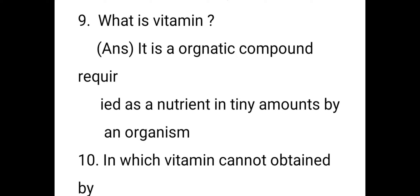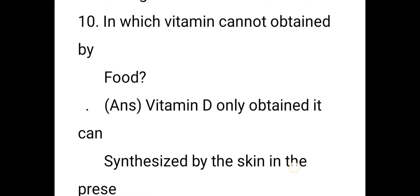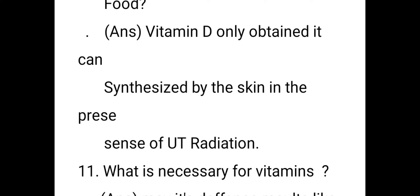What is a vitamin? A vitamin is an organic compound required as a nutrient in tiny amounts by organisms. The next question: which vitamin cannot be obtained from food? Vitamin D can only be synthesized by the skin in the presence of ultraviolet radiation — you can get Vitamin D from sunlight only. It cannot be obtained from any food.